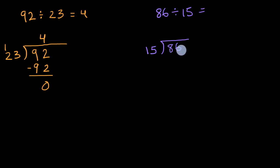86 is a little bit less than 90. 15 times two is 30. 15 times four is 60. 15 times six is 90. So that gets us too high. So it's going to be a little bit less than that. So let me just try 15 times five. Or let me see if 15 goes into 86 five times.